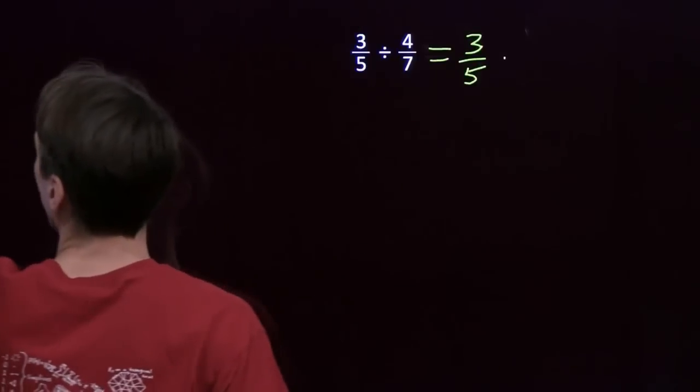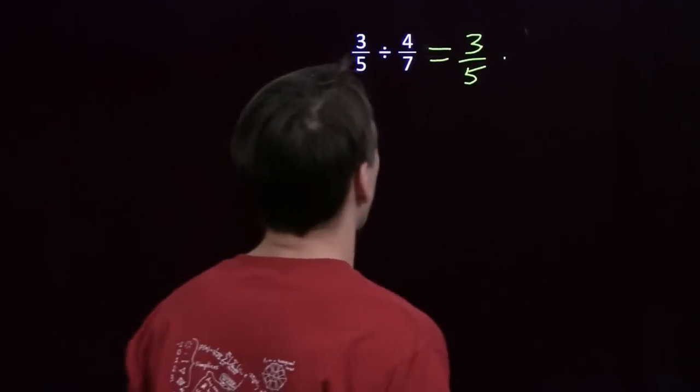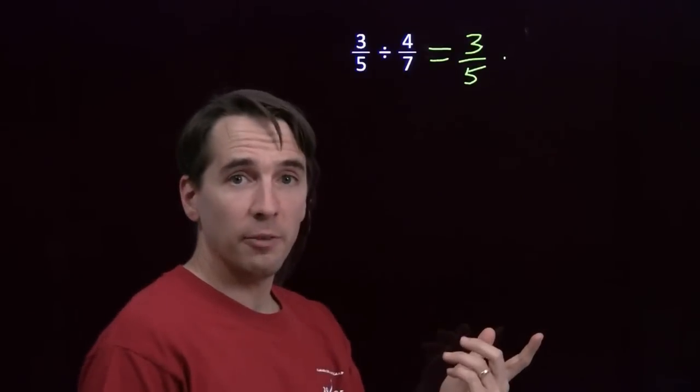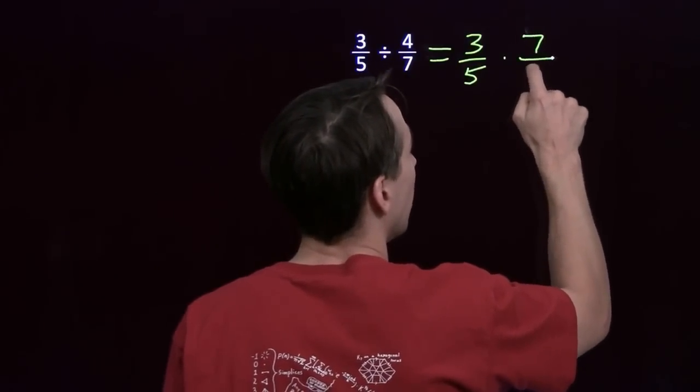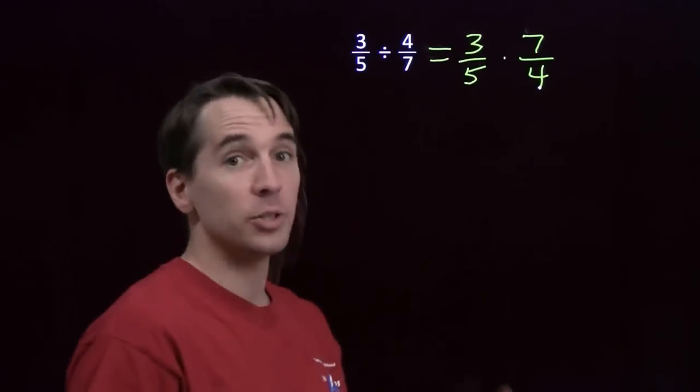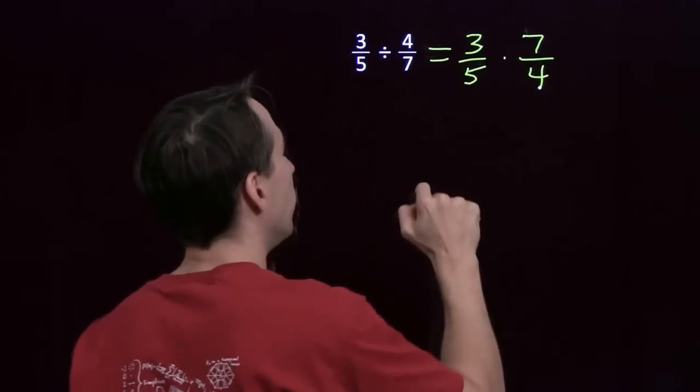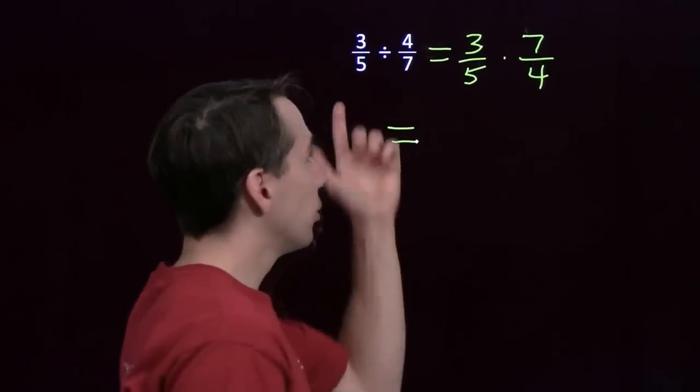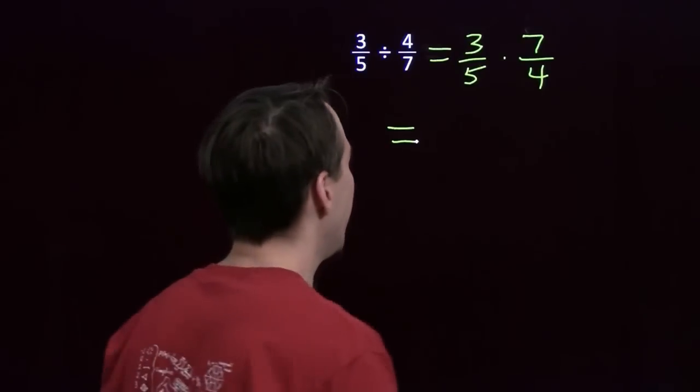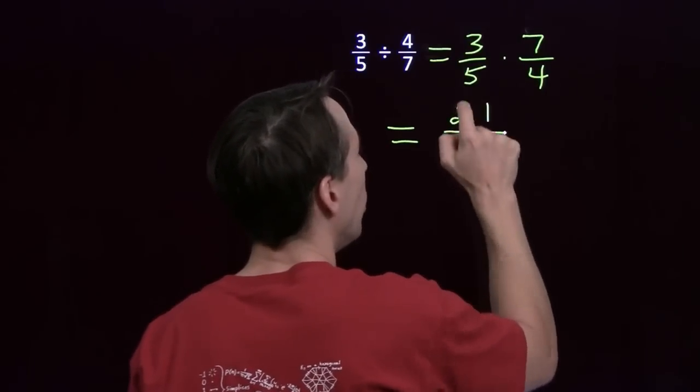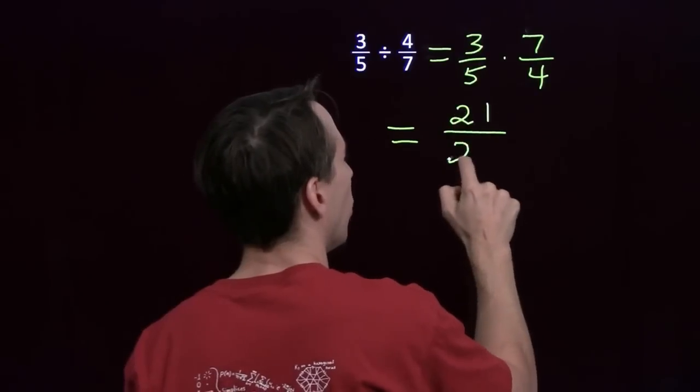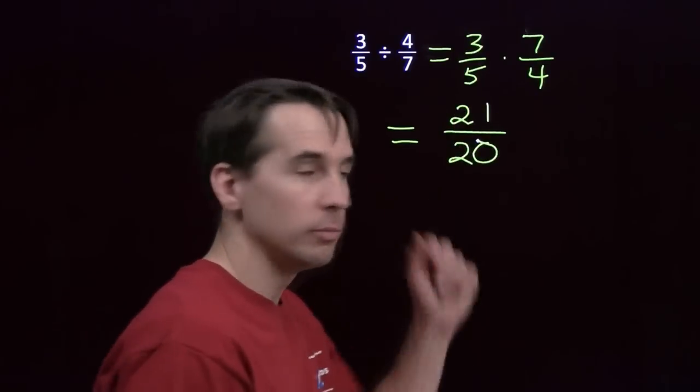Now we can go take care of this problem that we were working on before. 3/5 divided by 4/7 is just 3/5 times the reciprocal of 4/7. And the reciprocal of 4/7, we just flip the fraction over, we've got 7/4. And now we've turned our division into a multiplication, and we know how to handle multiplication. We multiply the tops, 3 times 7 is 21, multiply the bottoms, 5 times 4, 20. And we've knocked that off.